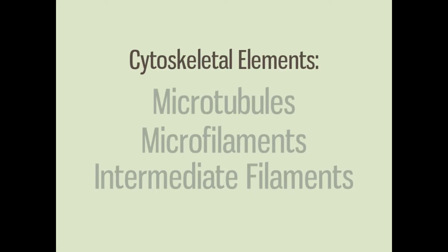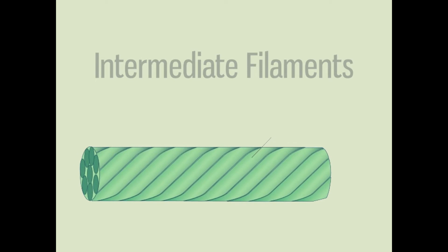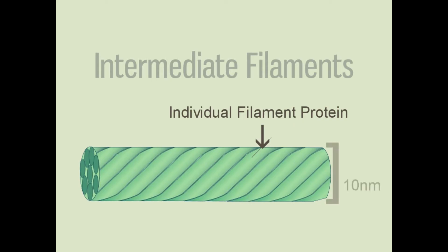The last group of cytoskeletal elements are called intermediate filaments. Unlike the others, they are not defined by their composition of a single monomer, because there are many kinds of intermediate filament proteins. Intermediate filaments are defined by their size — which is, you guessed it, intermediate. The average diameter of intermediate filaments is 10 nanometers, but that varies based on what type of protein they are composed of.